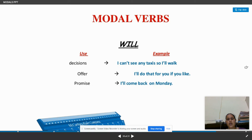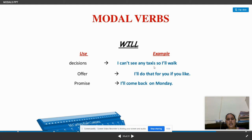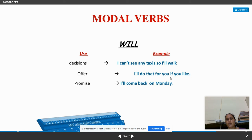Next we have 'will'. Will is also used for future tense. For example: I can't see any taxis so I will walk. We also use will to show decisions, offers, and promises. For example: I will come back on Monday — that's showing a promise. And: I'll do that for you if you like — that's an offer.